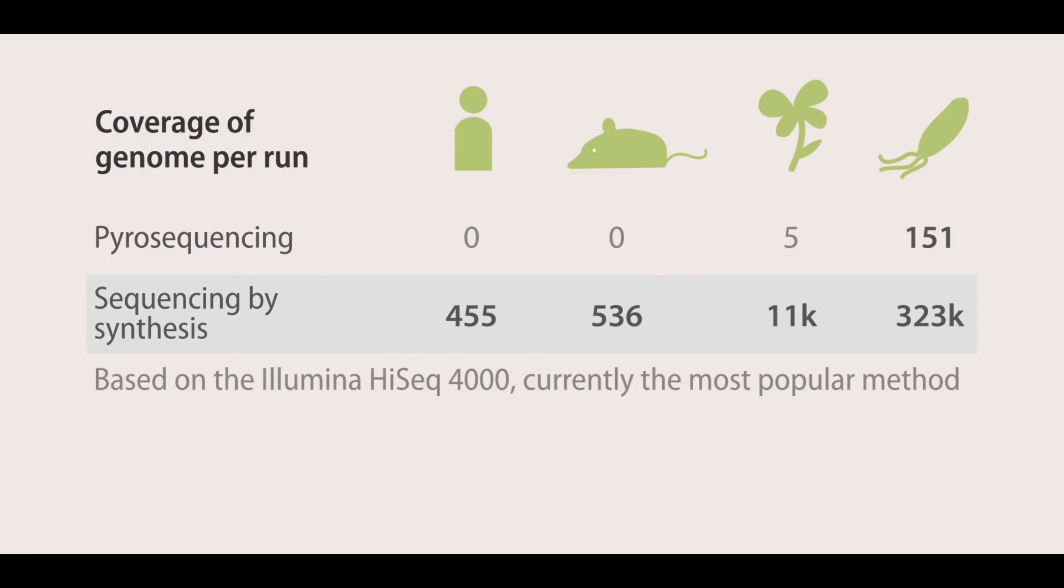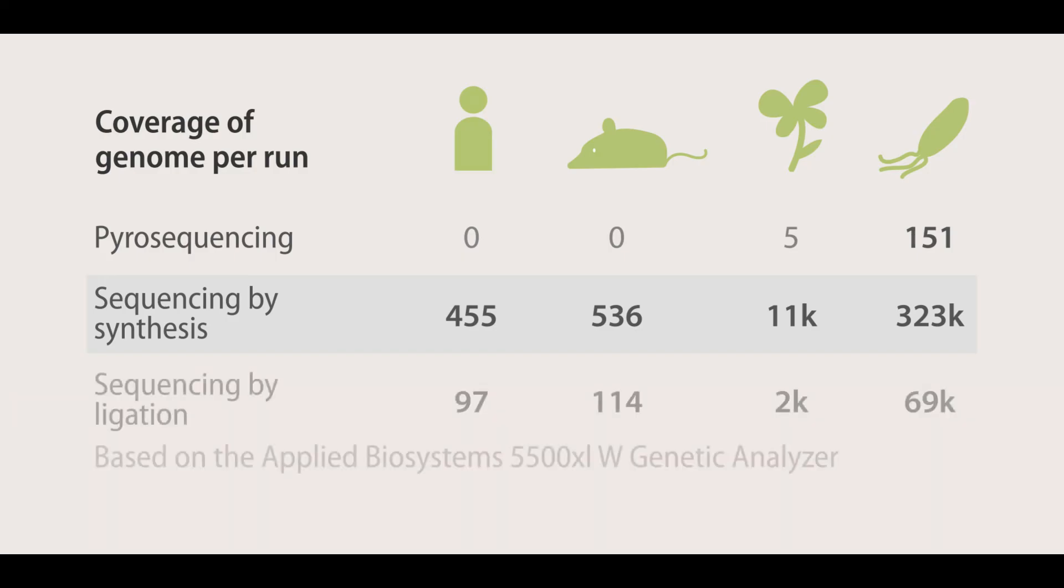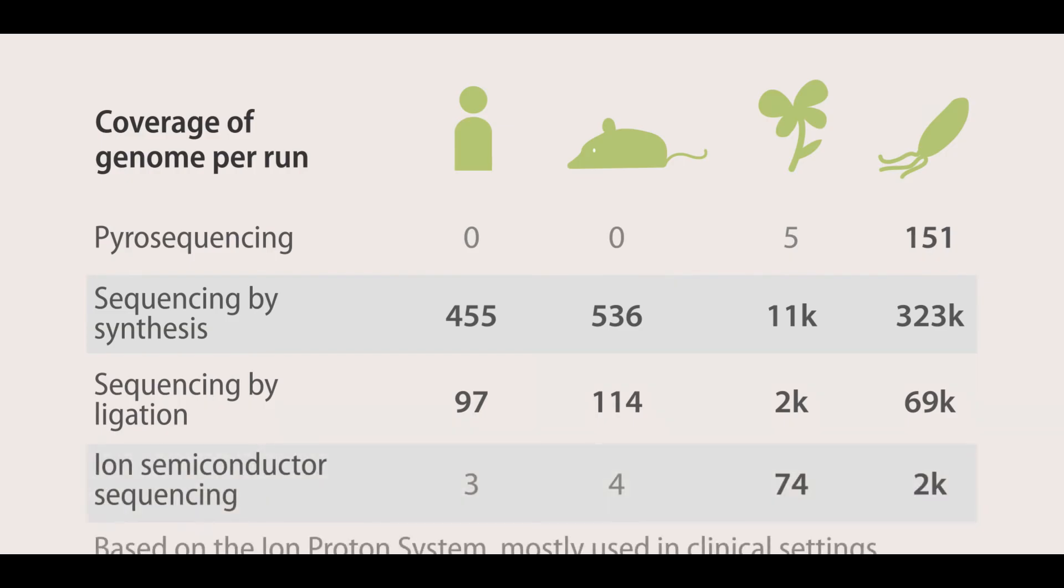In fact, with this machine, it is possible to sequence 15 individuals within 3.5 days. The sequencing by ligation method also generates enough coverage for all genomes to be used. However, it isn't capable of generating nearly as much output as the Illumina HiSeq machines. The ion-proton machine is used mostly in clinical setting because it is able to provide a sufficient size output within two hours.